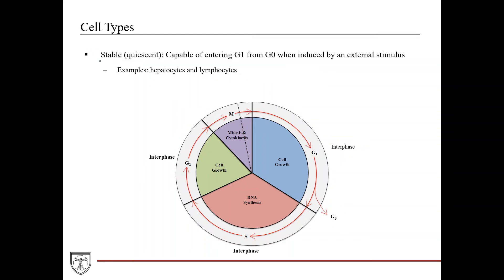Some cells can come out of G0 and re-enter the cell cycle—these are called stable or quiescent cells. They're quietly in G0 but are capable of re-entering if there's an external stimulus. Examples include hepatocytes in the liver, which can regenerate if hepatocytes have died off from toxin exposure, and lymphocytes, which proliferate in response to infection or autoimmune reactions.